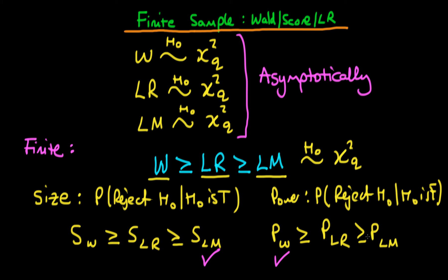It is actually possible to correct these test statistics such that they have exactly the same size, and in that circumstance the powers are very much comparable. So on the basis of these two properties, which statistic should we use? It depends on the circumstance. If the size of the statistical test is important, then perhaps we use the LM statistic. If it's the power, then perhaps we use the Wald statistic. And if we're ambivalent between these two properties, perhaps we use the LR statistic. There's no simple rule for deciding between these three test statistics — it's going to be guided by the exact circumstances.